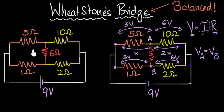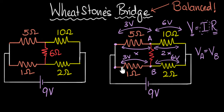So to summarize: a basic Wheatstone network has four resistances connected in a bridge with a resistance in between. It's balanced when the resistances are in the same ratio. When that happens, the voltages get divided equally, and therefore the voltage across the middle resistor is zero — no potential difference, no current flows. That's a balanced Wheatstone network.